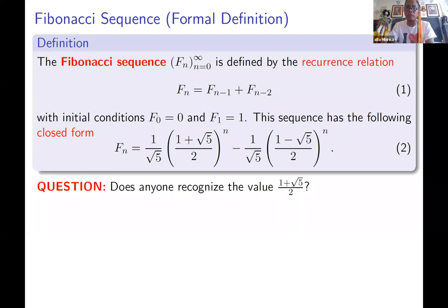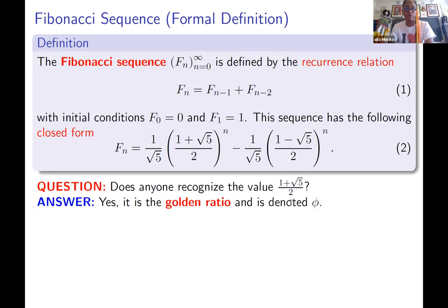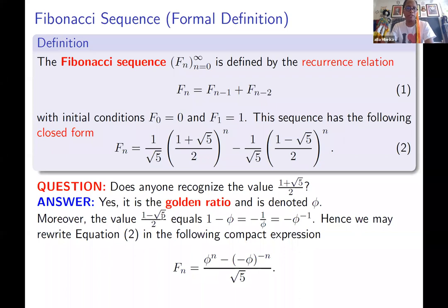Does anyone recognize the value of one plus root five over two? It's cooler than pi — it's the golden ratio. Some might argue pi might be cooler, but I love the golden ratio. It's denoted by the letter phi. Moreover, its partner in crime, one minus root five over two, is equal to one minus phi, which happens to equal the negative reciprocal of phi. So we can actually write this part as negative the reciprocal of phi, giving us a beautiful form at the bottom.